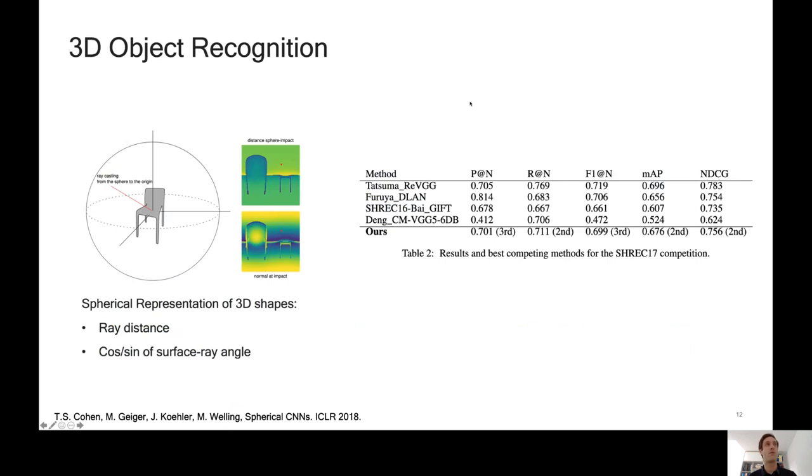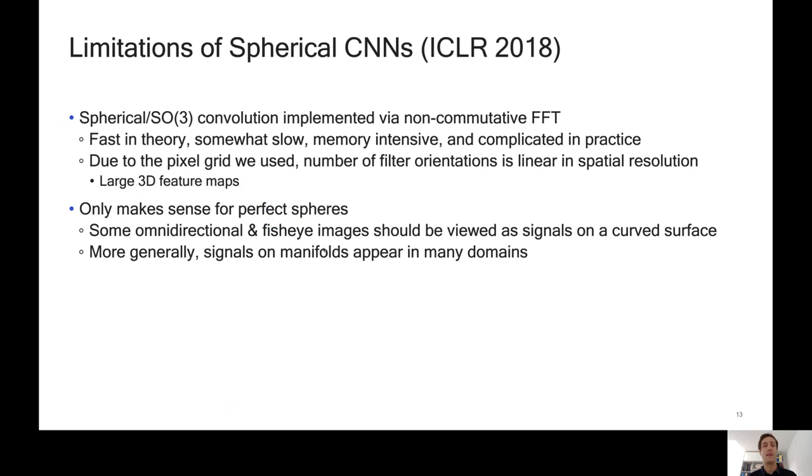We applied this to a number of problems, for example, 3D object recognition, where you take a 3D object and you basically raycast from every point on the sphere to the center, register the distance, and generate a bunch of other feature maps. This is a lossy representation. It doesn't capture all the information about the shape, but nevertheless, we show that with spherical CNNs, you can do quite well in classifying these objects. And moreover, it automatically generalizes to arbitrary rotations.